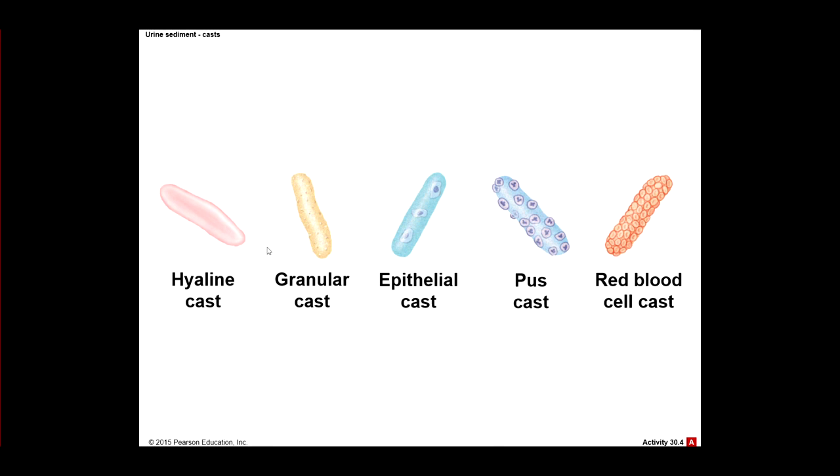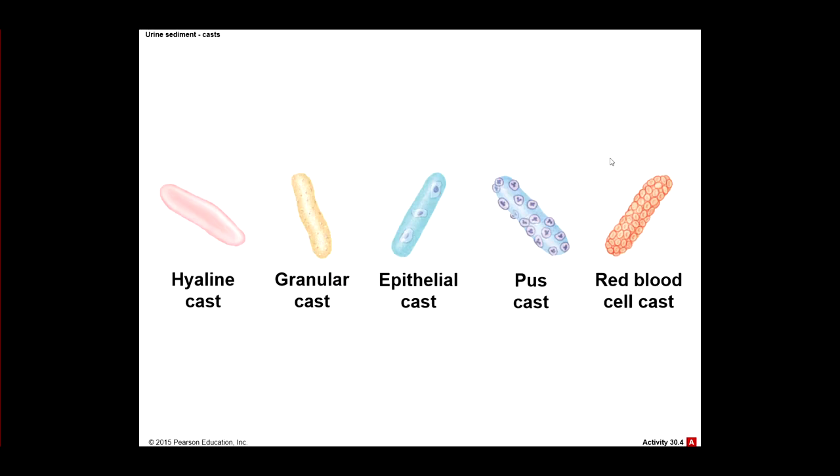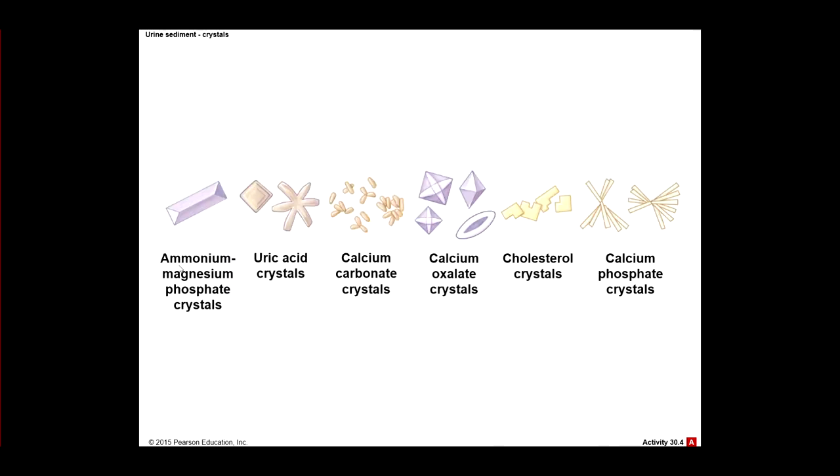So here's some pictures of some casts. These are different things that have taken on the shape of the kidney tubule. So just as some examples, white blood cells, pus, red blood cells, epithelial cells, different types of grains that we have. Hyaline. It's just different chemicals. You don't have to memorize these. It's just kind of interesting. Different crystals. Ammonium, magnesium, phosphate crystals. Uric acid crystals. Calcium carbonate. Calcium oxalate. Even cholesterol, calcium phosphate. These are all different abnormal constituents of our urine.